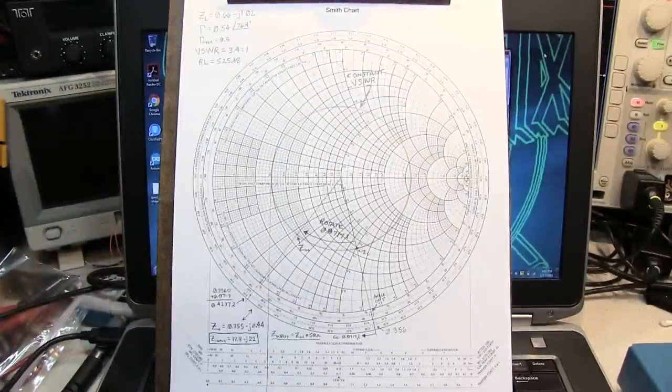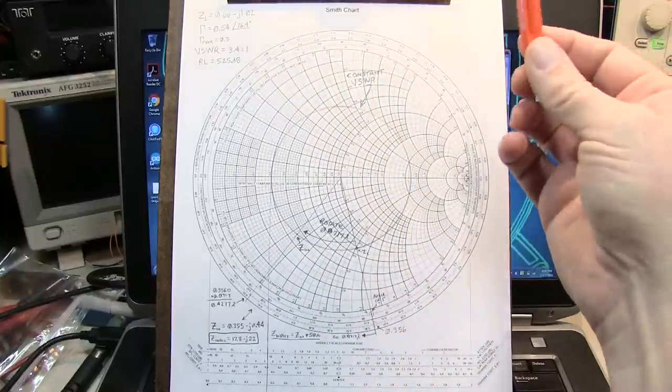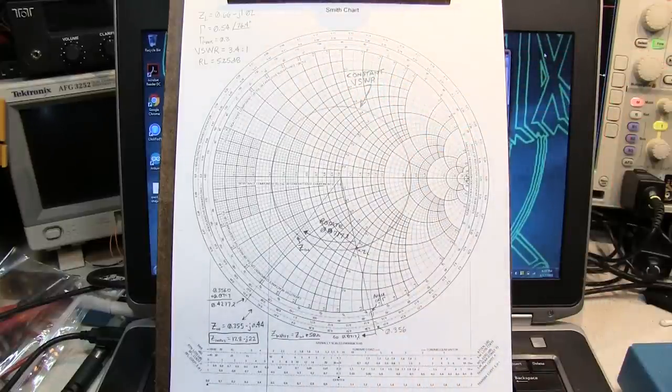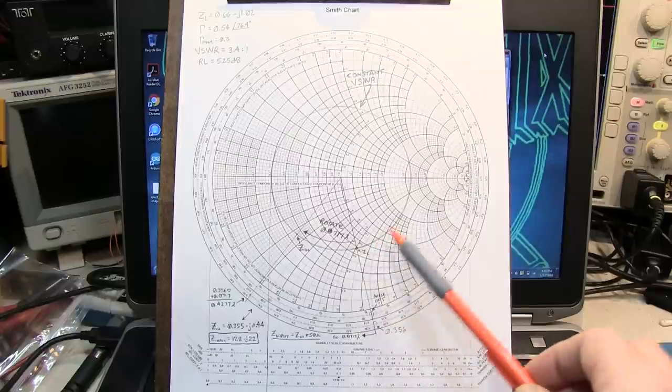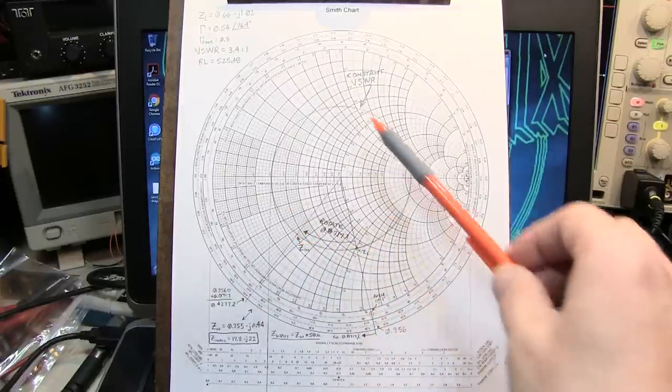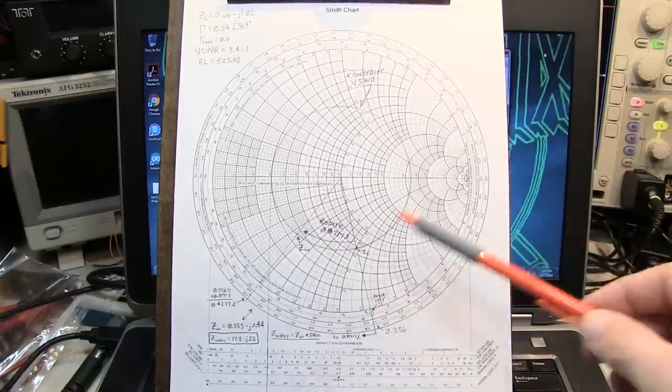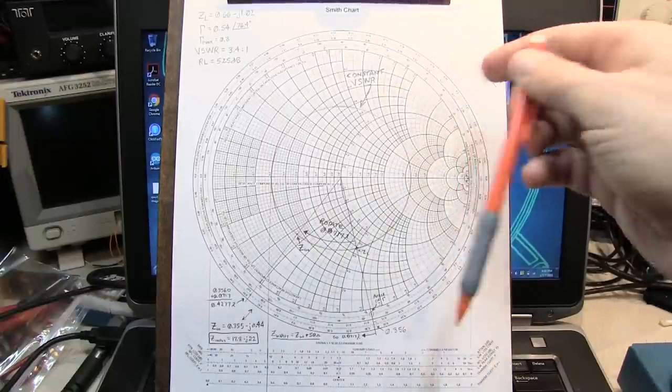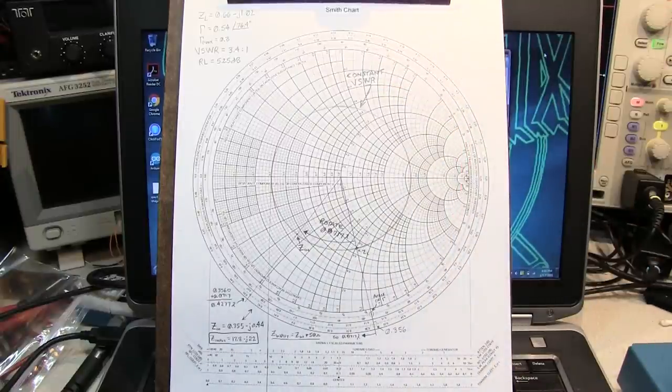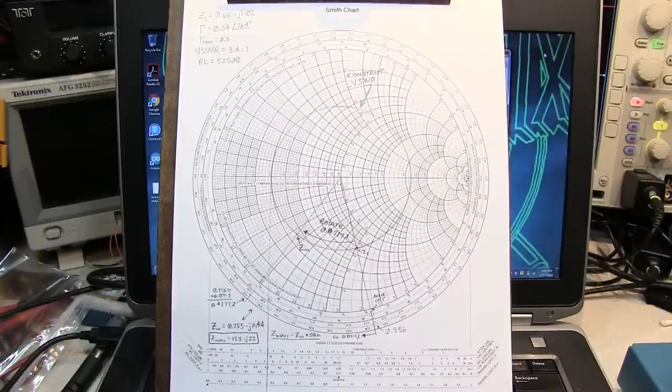We looked at how to plot a complex impedance on the Smith chart, how to determine complex reflection coefficient and SWR return loss, and how to see what the impedance looks like with different connected line lengths to that load. As always, all these notes will be available in a PDF file with a link in the video notes below. If you like what you saw, give me a thumbs up. Please subscribe if you haven't done so already. I'd love to hear your comments, and thanks again for watching.